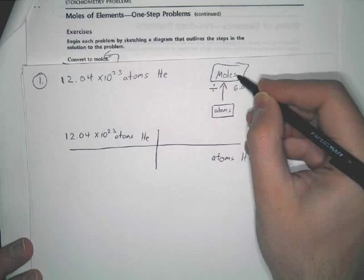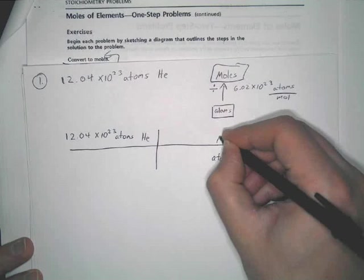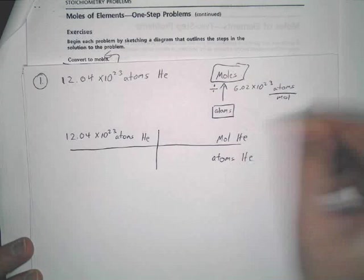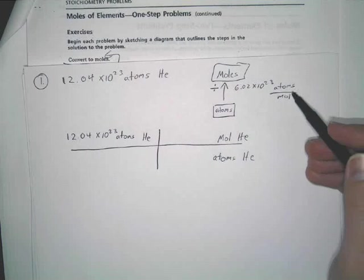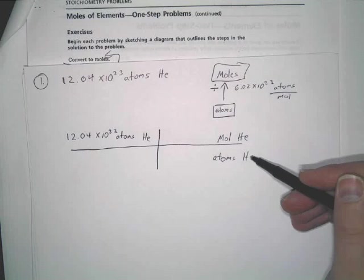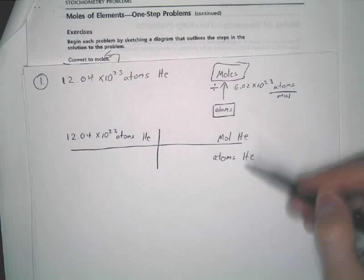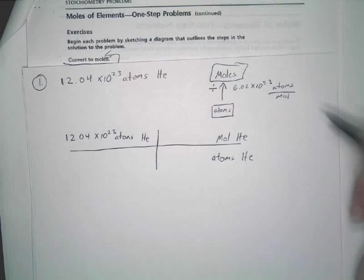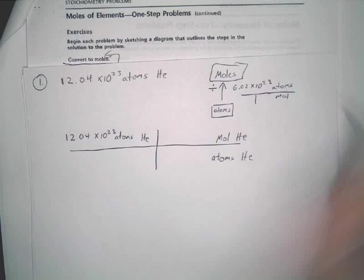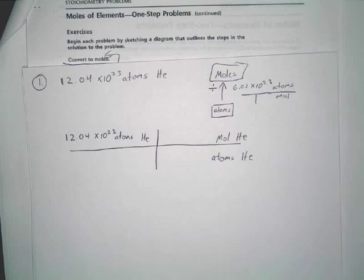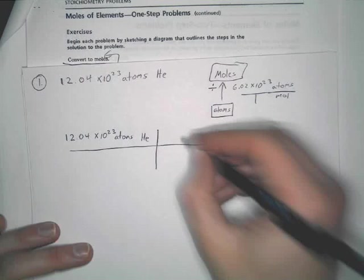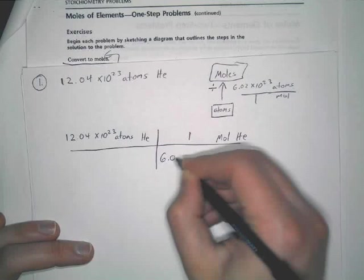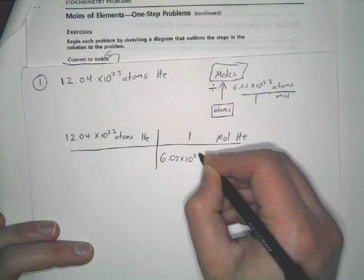Then what are we converting to? Moles. Now, notice, this is the opposite of this, correct? Those do not match up. That's okay. Because you can flip this either way, as long as you again remember, one mole is equal to that many atoms. So, we put one here. We've got 6.02 times 10²³ atoms.